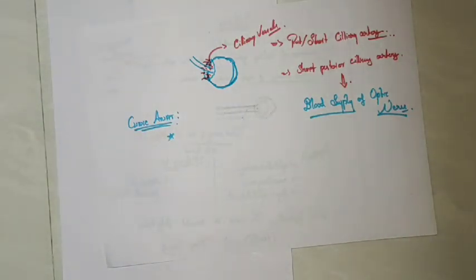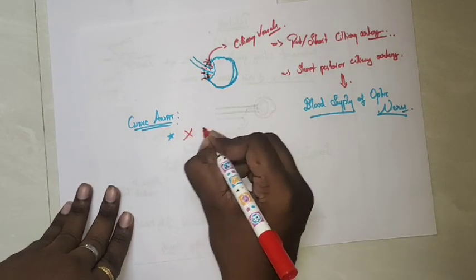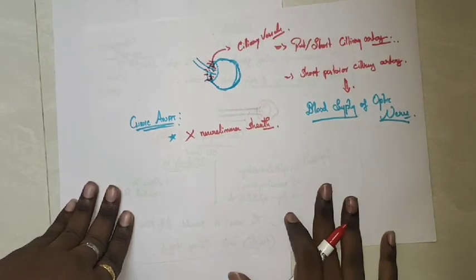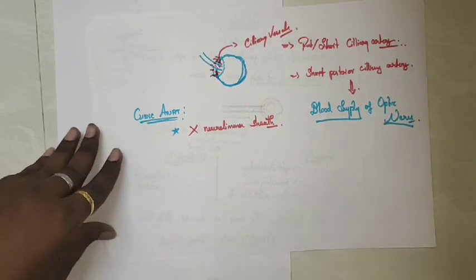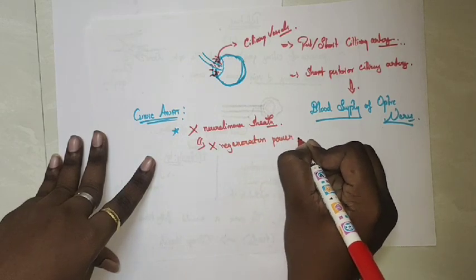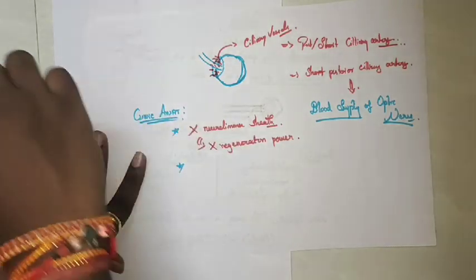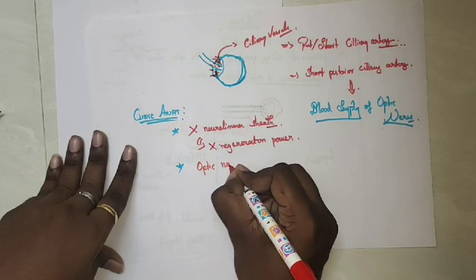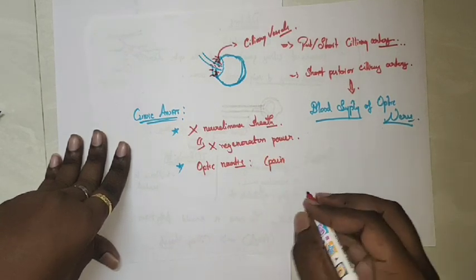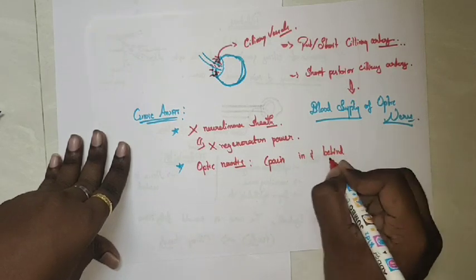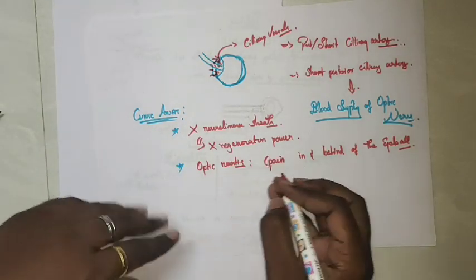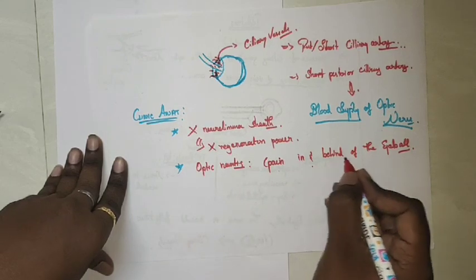Clinical anatomy is also very important for exams. The optic nerve has no neurilemma sheath, and hence once destroyed it remains destroyed — there is no regenerative power. Optic neuritis is a major clinical condition characterized by pain in and behind the eyeball in response to any ocular movements.